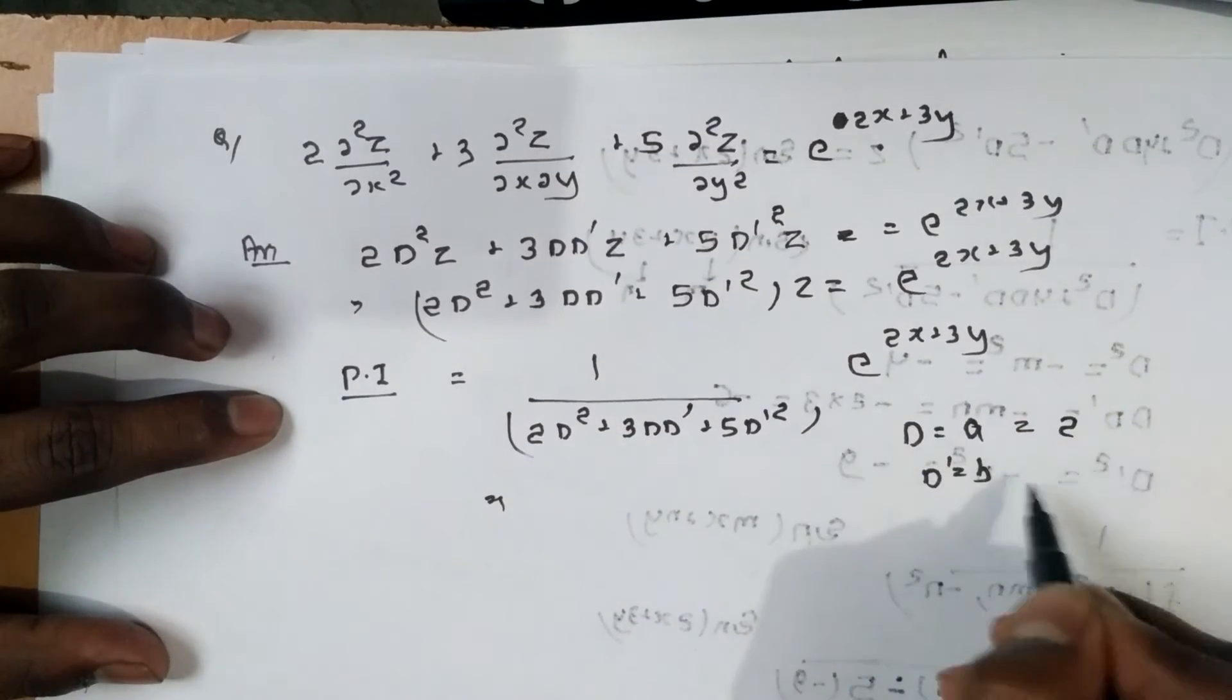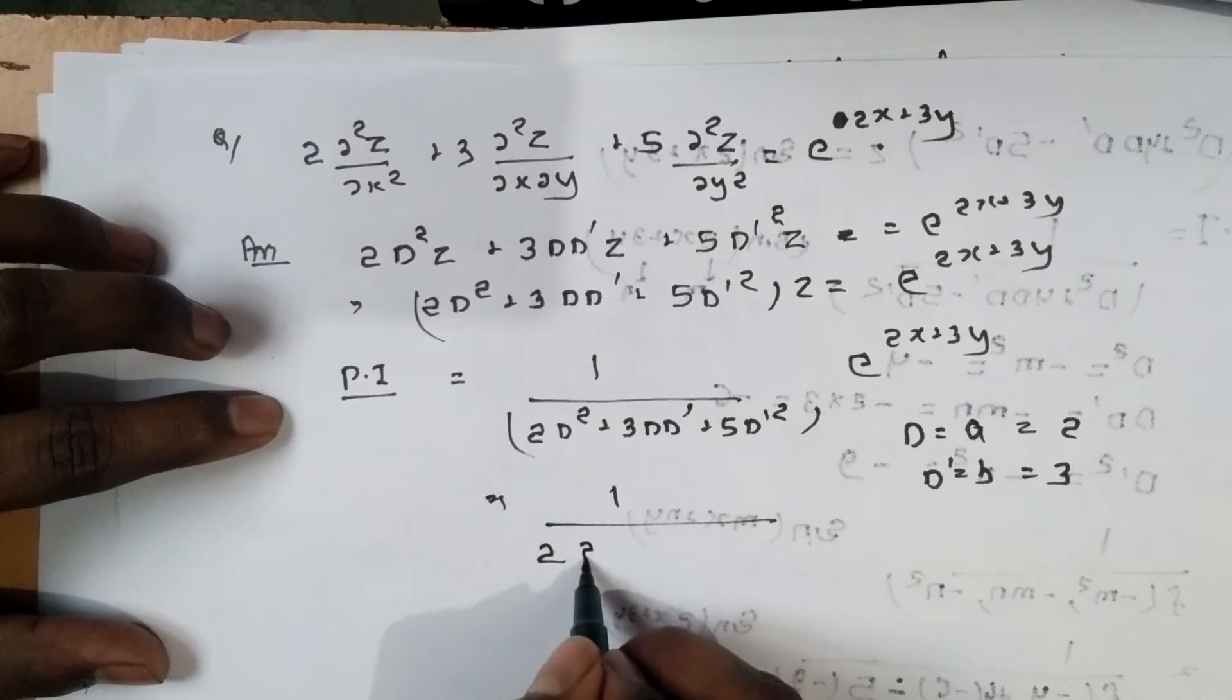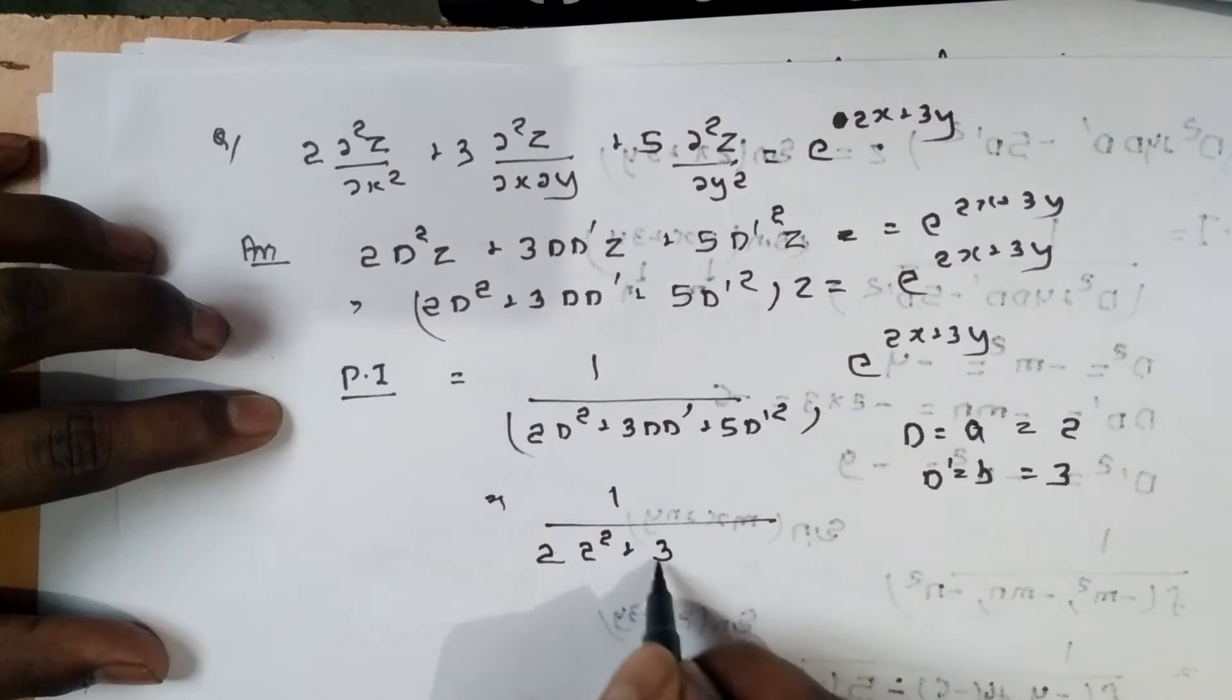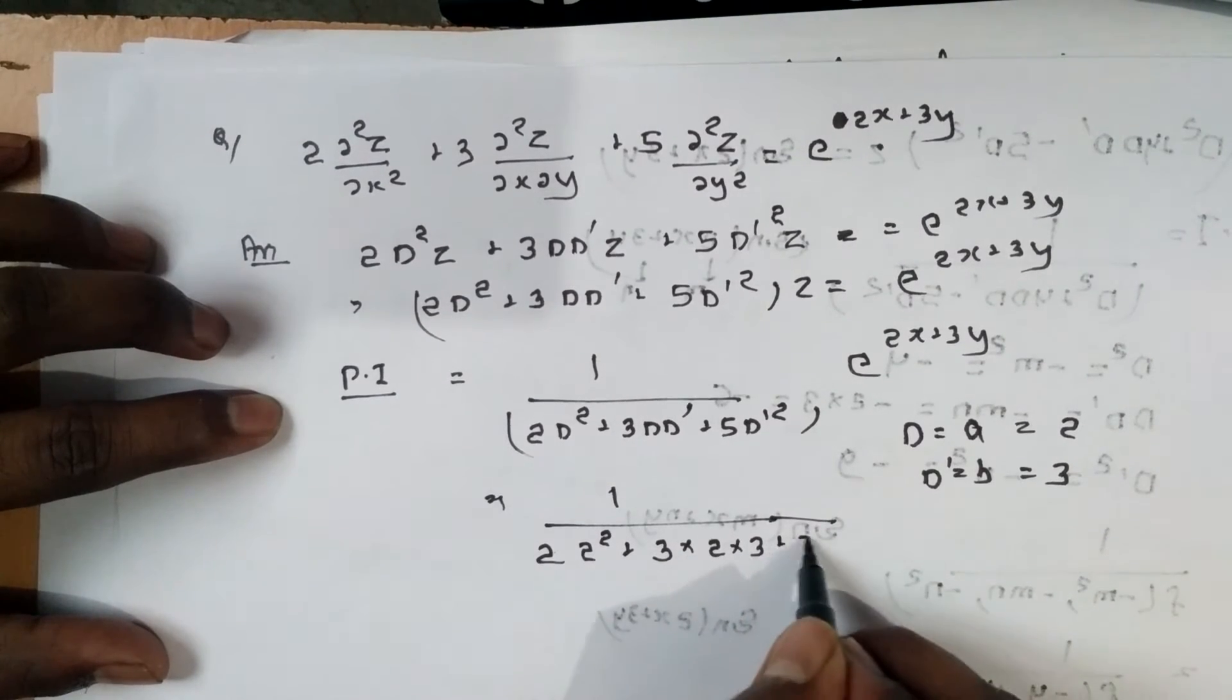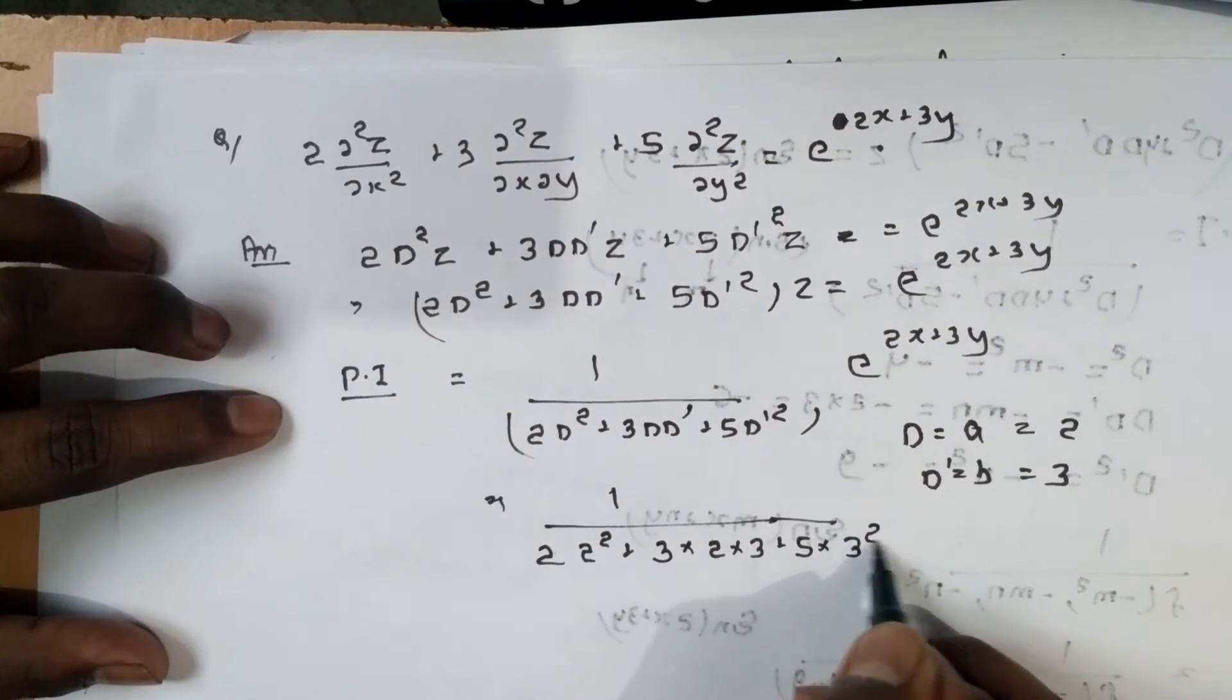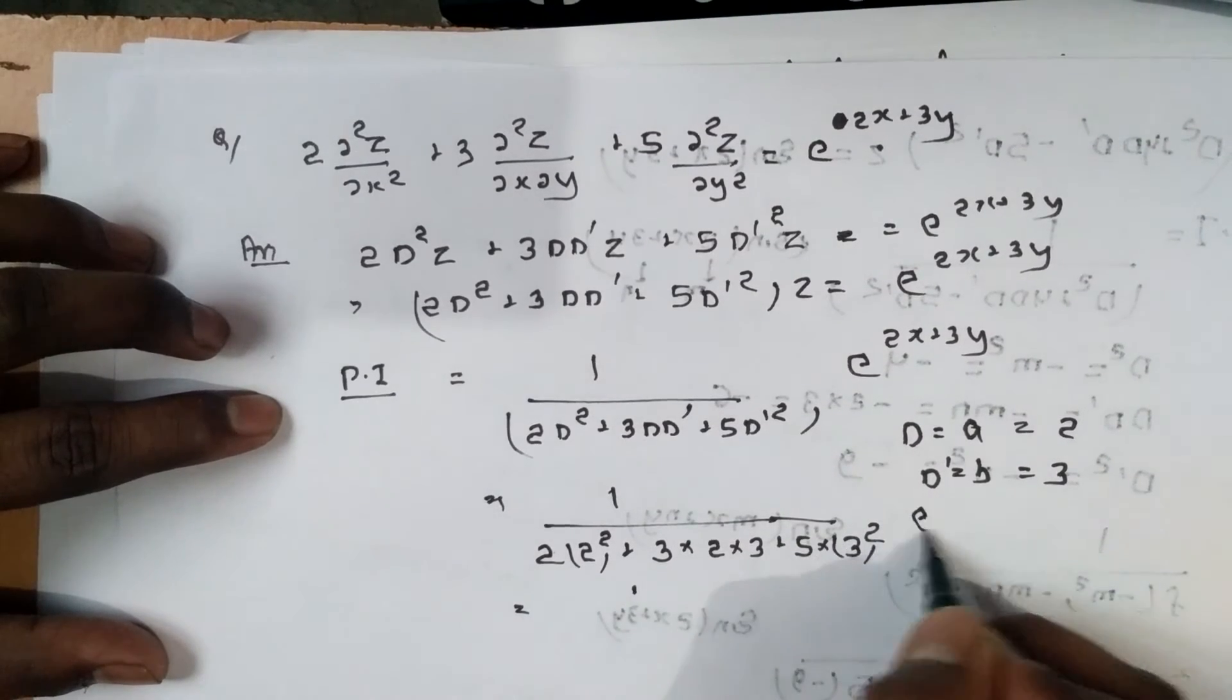Here a is 2 and b is 3, so we write 2(2²) + 3(2)(3) + 5(3²) in the denominator with e^(2x+3y) in the numerator.